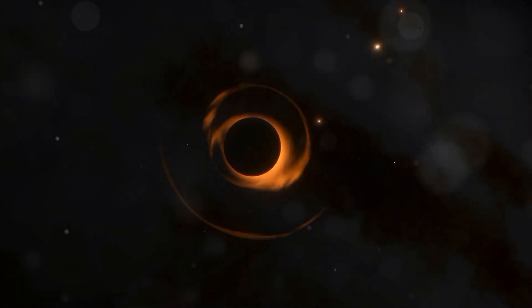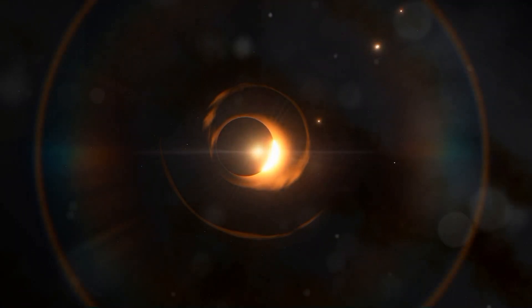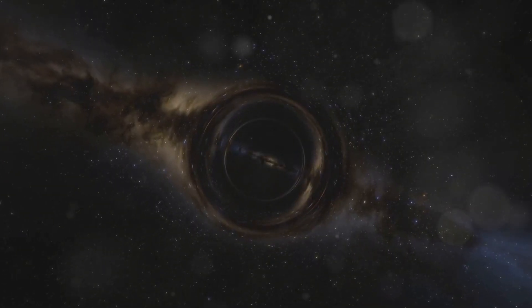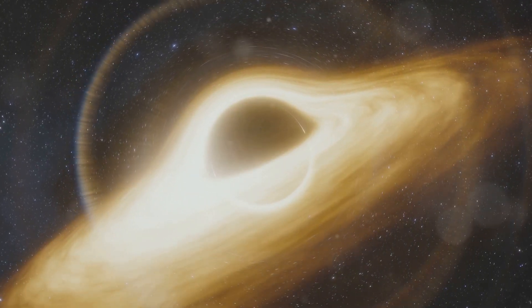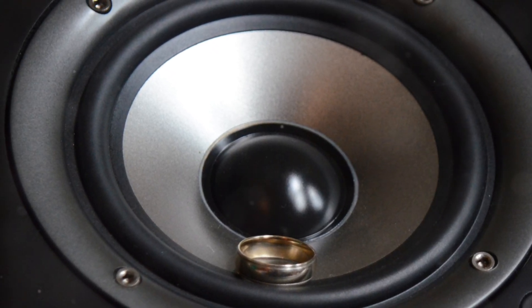The event horizon of a black hole marks the boundary beyond which the warping of space-time becomes so extreme that not even light can escape. Imagine falling into a black hole. As you approach the event horizon, you would experience time dilation. Time would slow down for you relative to an observer at a safe distance.